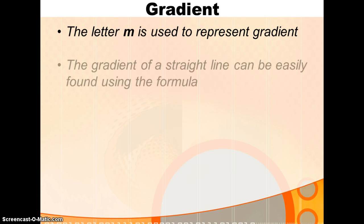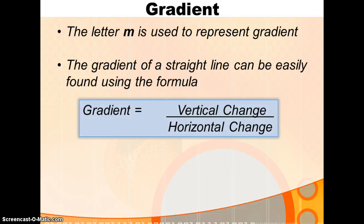The letter M is used to represent gradient. The reason being that M stands for modulus, which is an alternative word for gradient. And the gradient of a straight line can be easily calculated just using the formula that the gradient is the vertical change over the horizontal change. Or if you like, rise over run, for short. M equals rise over run.